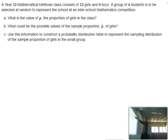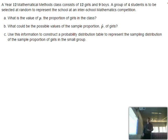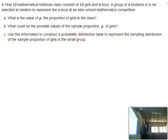We've got a Year 12 maths methods class consisting of 12 girls and 9 boys, so we've got two different types of observed outcomes in our population. We're after a group of four students — that sounds like a sample — to be selected at random to represent the school at an inter-school maths competition.